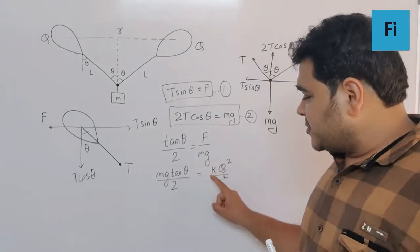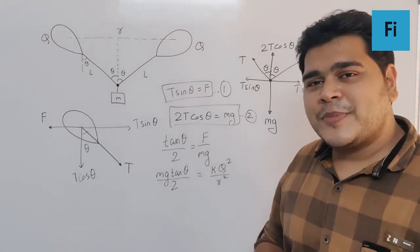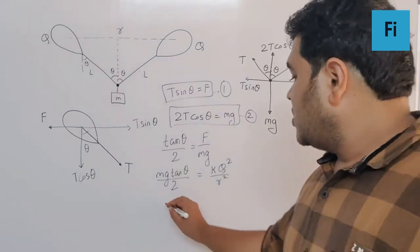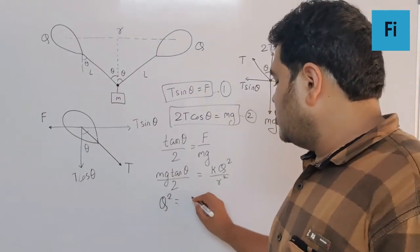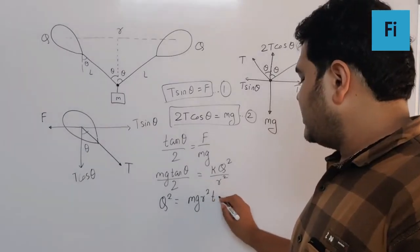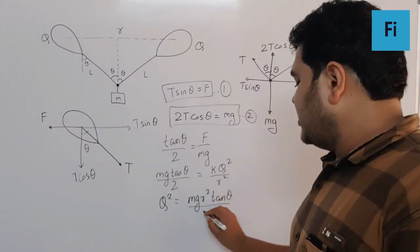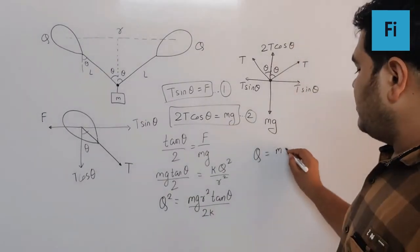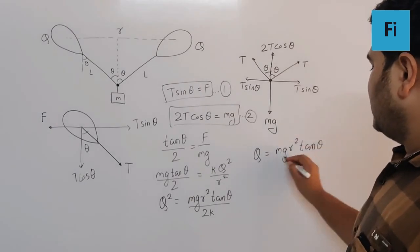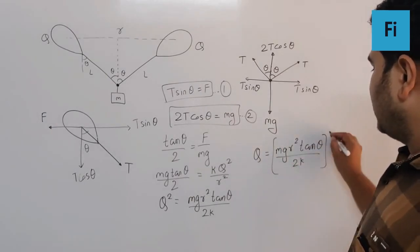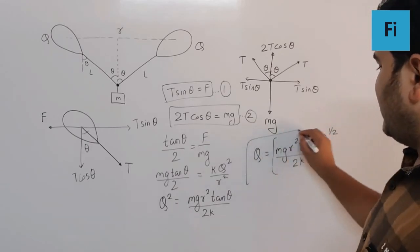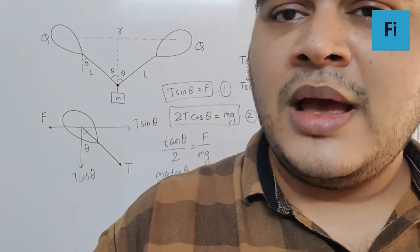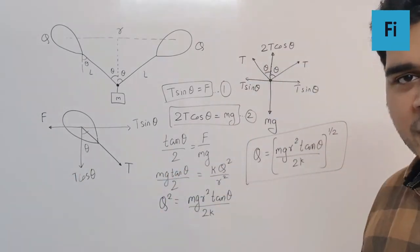I can take this k and r square on the other side and I will have q square equals m g r square tan theta by 2k. So definitely the final answer: q equals the square root of m g r square tan theta upon 2k. This will be your final answer. I hope you have understood this.